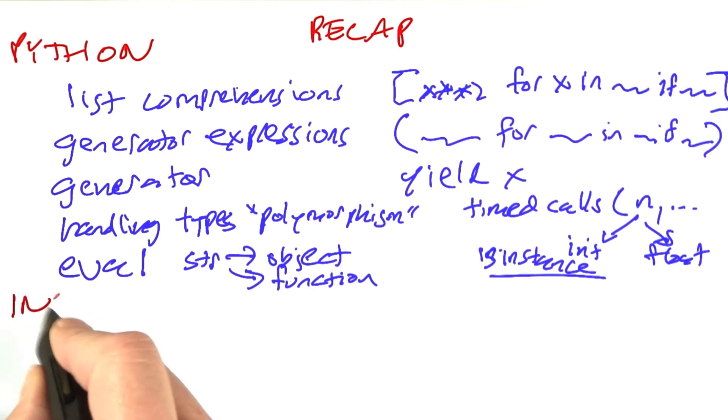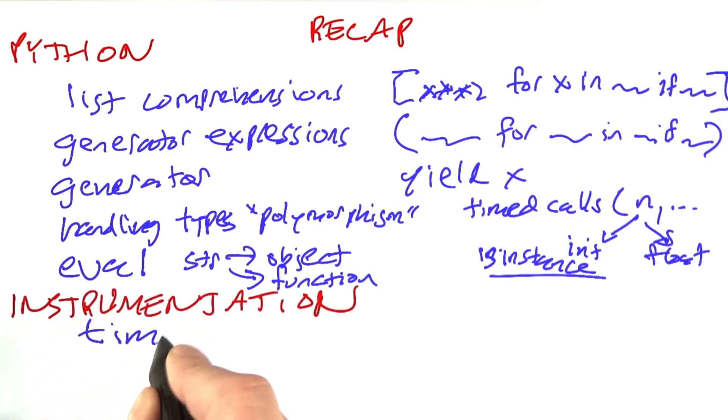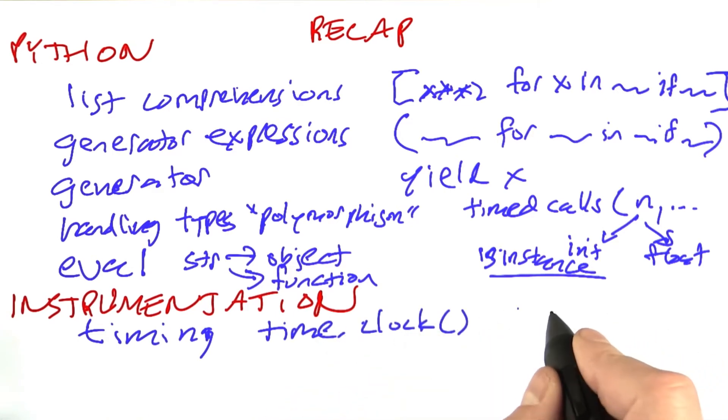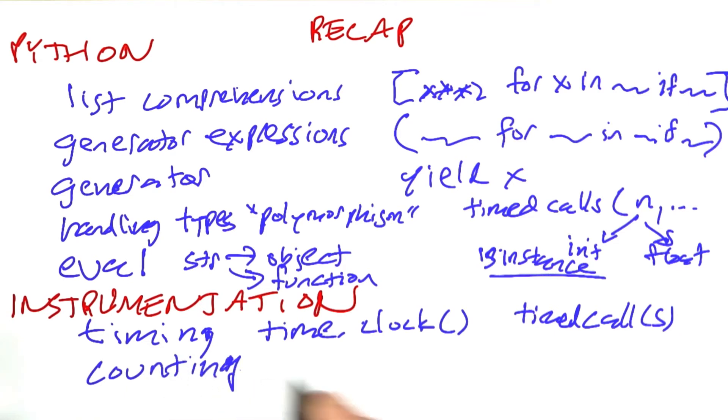We also talked about instrumentation, and we did timing with the time.clock method that's built in, and then we built up timed call and timed calls routine. We talked about counting number of invocations of functions or assignment statements or whatever, and there we came up with our own routine that we called C.